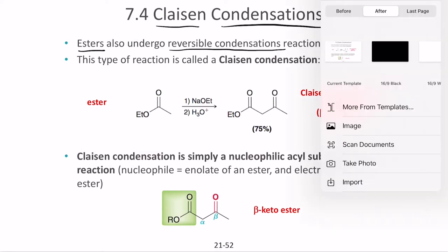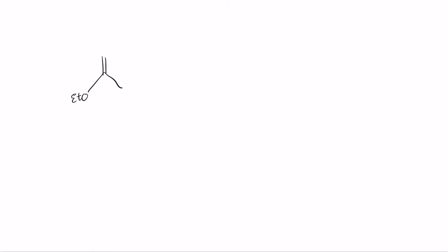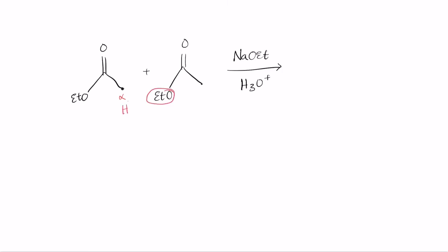Let's take a simple example and see how it looks. Say we have an ester — ethyl methyl ethanoate — and there are two of them. The two esters in the presence of sodium ethoxide and an acid undergo condensation. One alpha position is present, and the ethoxide and the proton from the alpha position both combine and exit the structure as ethyl alcohol, while that carbon bonds itself to the other structure.